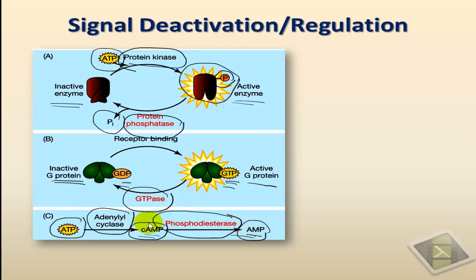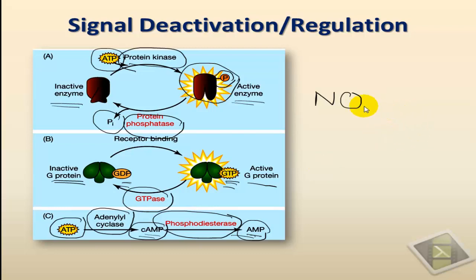There are other ways cells can deactivate signaling systems. One second messenger is nitric oxide, known as NO. Nitric oxide is a gas and it diffuses very fast. By the mere fact that it diffuses, it becomes inactive if it moves away from its target molecules. Its concentration is crucial — when released in smaller amounts and it starts diffusing, it becomes inactive.